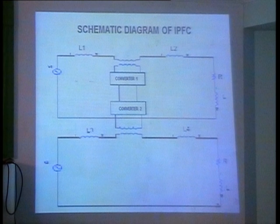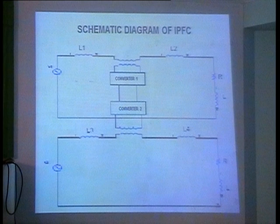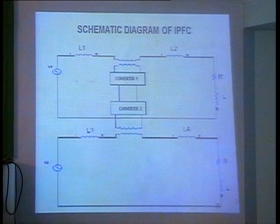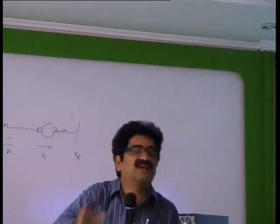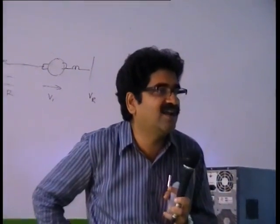In a 4-bus system model, short lines are represented as R and L. When doing simulation you model your power system as an equivalent circuit: your line is represented as R and L; your generator is represented as RLE — generator resistance, generator reactance, and EMF.